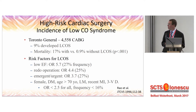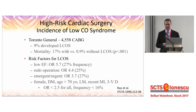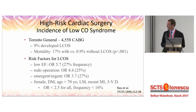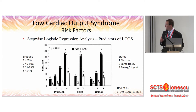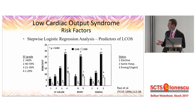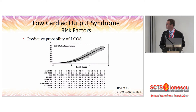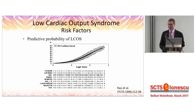At Toronto General, they looked at 4,500 CABG patients and retrospectively assessed that 9% developed low cardiac output syndrome. Those patients had a mortality rate of 17% compared to only 1% in patients that didn't. Risk factors included low ejection fraction, re-operation, and emergent or urgent surgery. As the left ventricular ejection fraction drops below 20%, there can be a very high incidence of low output syndrome and a mortality of 11%, compared to 1% with a normal ejection fraction. They used a predictive formula, and if you had all three risk factors, 80–90% would develop low cardiac output syndrome.